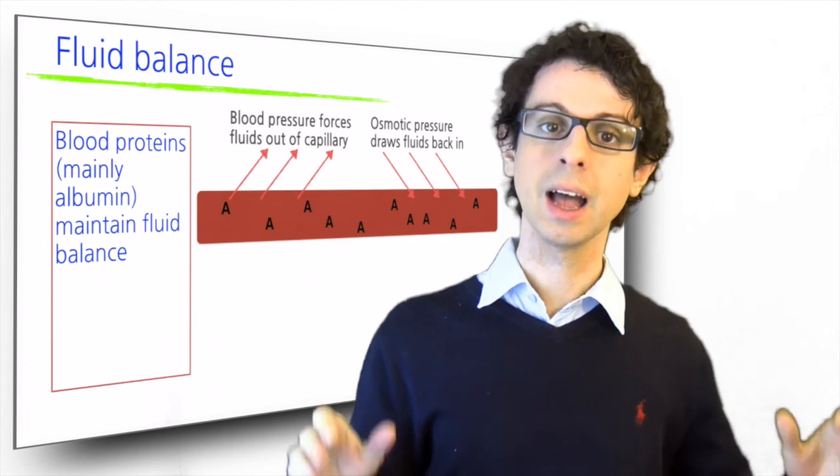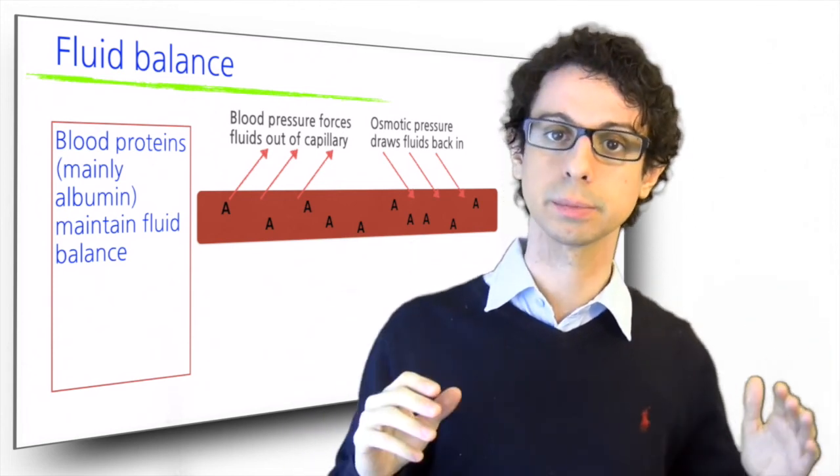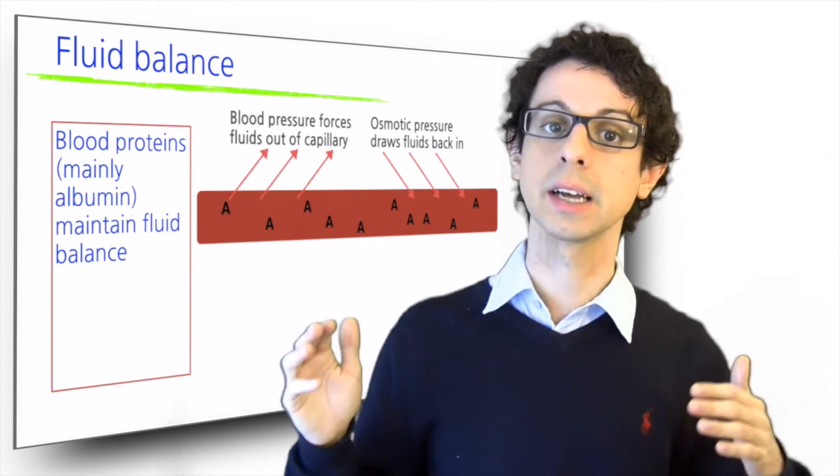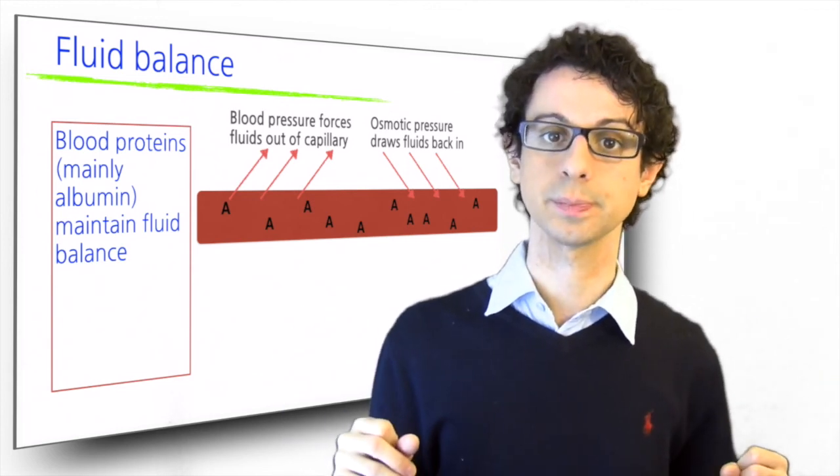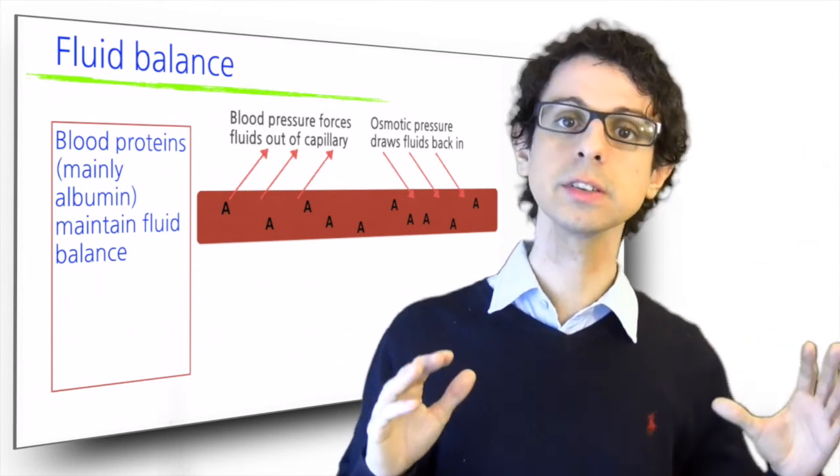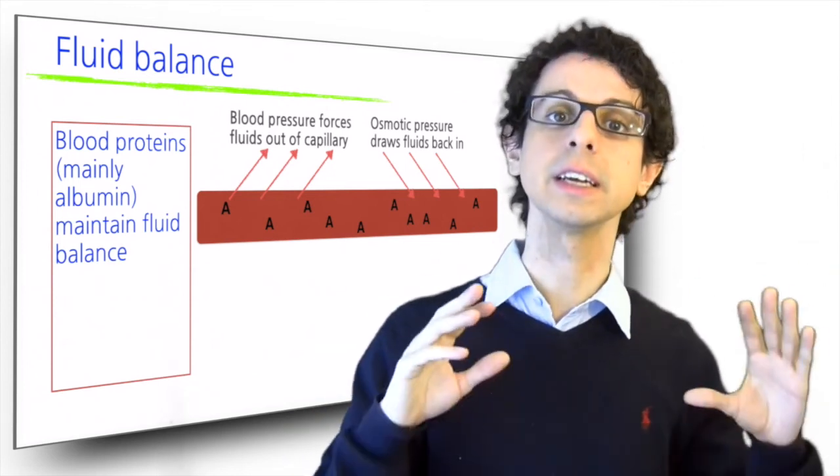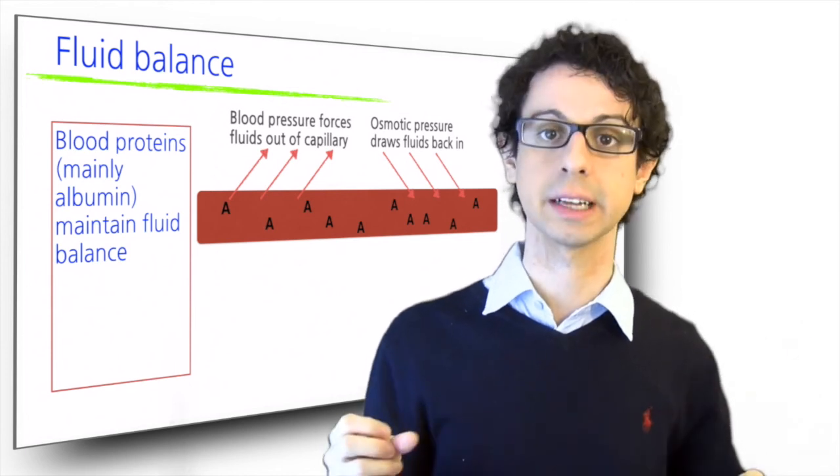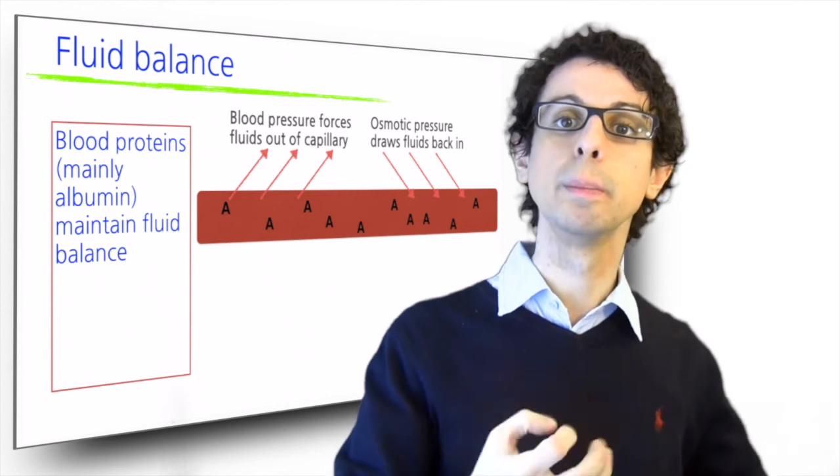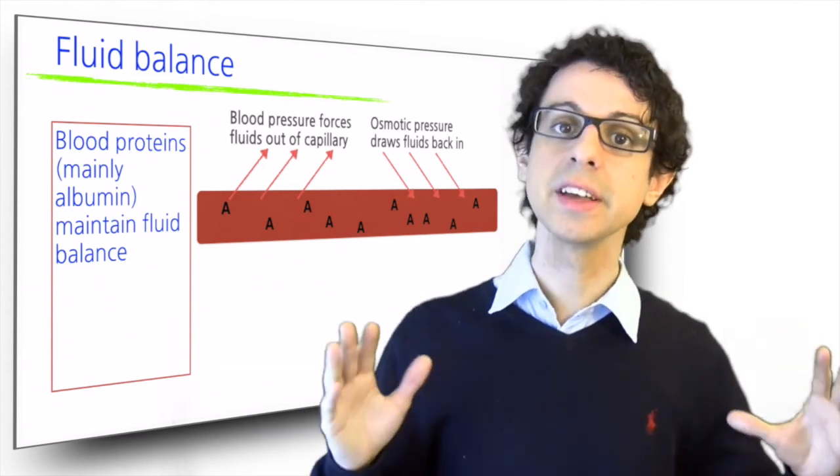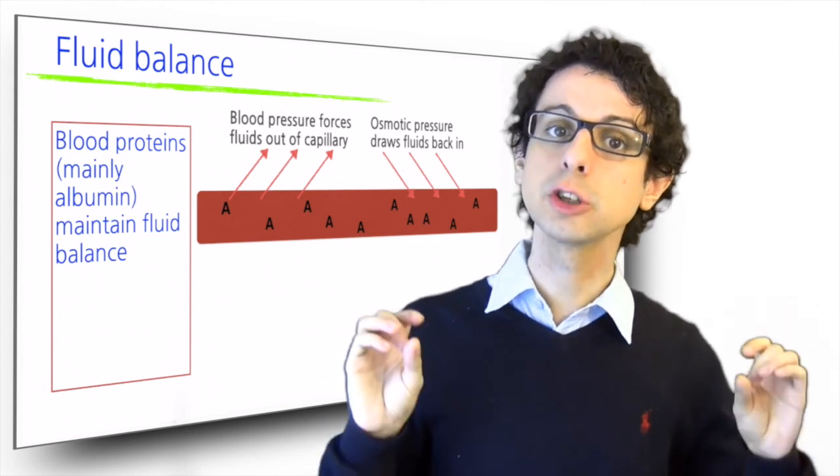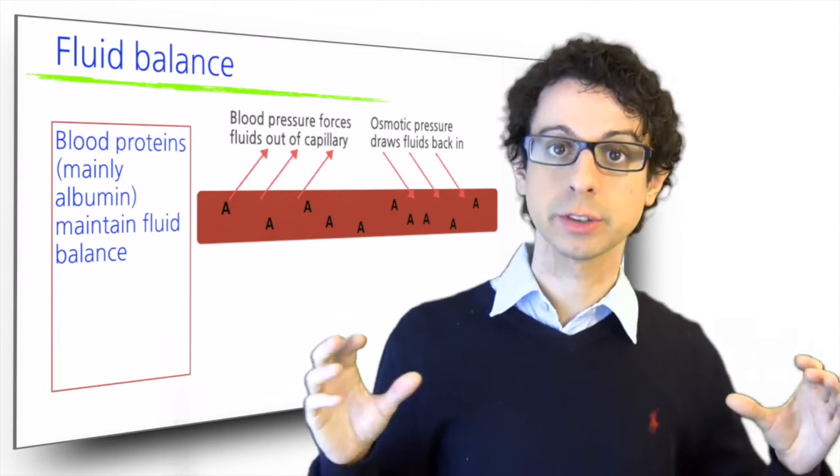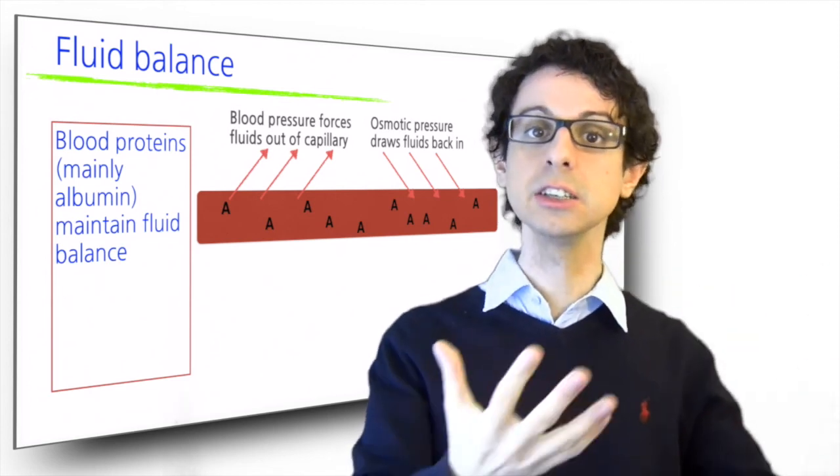One is fluid balance. A lot of proteins, and especially the most abundant protein we have in our bloodstream, which is albumin, help maintain the appropriate distribution of water inside and outside our cells and our different tissues and organs. At the capillary beds, blood pressure forces fluids out of the blood vessels into the interstitial space so that they can exchange nutrients, oxygen, carbon dioxide and waste products with our cells. But after the exchange is over, fluids have to go back inside our blood vessels to keep circulating. And this is accomplished by albumin. Albumin is too big to go through the capillary walls, and so it stays inside. This creates an osmotic pressure that will then suck fluids back from the interstitial space into the blood vessel.